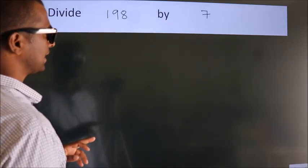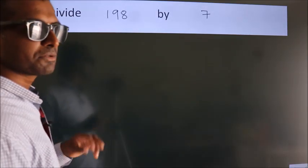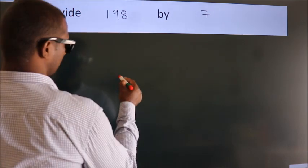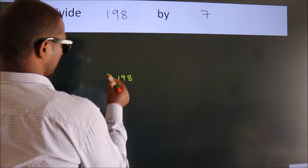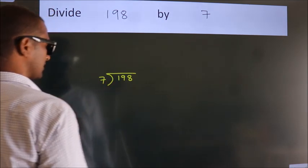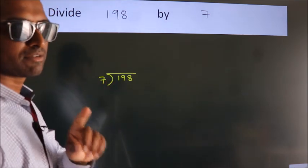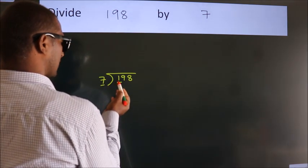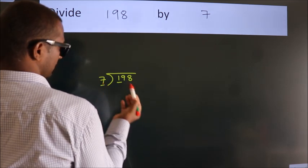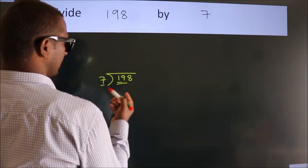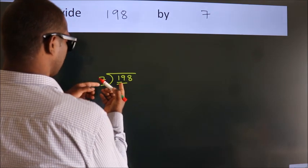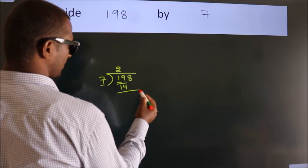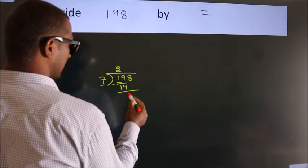To divide 198 by 7, we frame it this way: 198 here, 7 here. This is step 1. Next, we have 1 here. 1 is smaller than 7, so we take two numbers: 19. A number close to 19 in the 7 table is 7×2=14. Now we subtract and get 5.